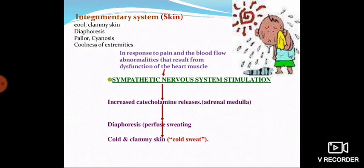In the integumentary system — the skin — symptoms include cool, clammy skin, diaphoresis (excessive sweating), pallor, and coolness of extremities such as the hands and feet. This occurs in response to pain and blood flow abnormalities resulting from dysfunction of the heart muscles, which leads to sympathetic nervous system stimulation and increased catecholamine release from the adrenal medulla, causing cold and clammy skin — that is, a cold sweat.